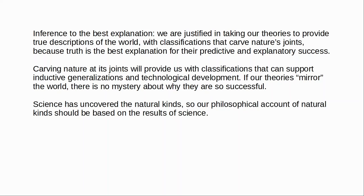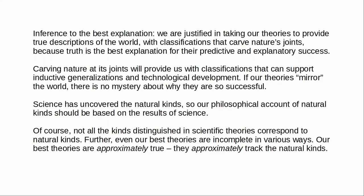This need not involve the assumption that all kinds found in scientific theories correspond to natural kinds. Many theories have been discarded and with their disappearance many theoretical terms once taken to refer to natural kinds slipped out of use — nobody supposes that caloric or phlogiston name natural kinds. We also know current theories are incomplete and likely to change. This point is generally dealt with by appealing to approximate truth: our theories are not true but approximately true, and they approximately track some of the natural kinds. We may be mistaken about some kinds, ignorant of others, but by and large our theories get it right.